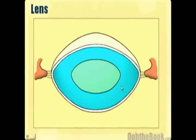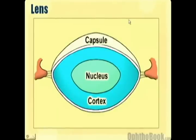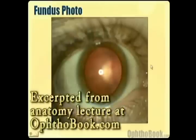The lens is like a peanut M&M: there's a hard candy shell on the outside called the capsule, a chocolate layer or cortex, and a peanut in the middle called the nucleus. In cataract surgery, we tear a hole in the front of the capsule, run in a tool that acts like a jackhammer to break up the nucleus and cortex, suck everything out with a vacuum, and then inject a new implant inside the capsule where it sits in the appropriate position.